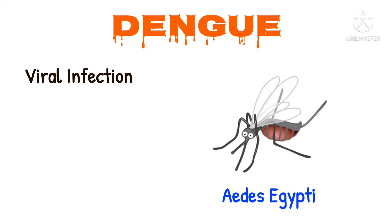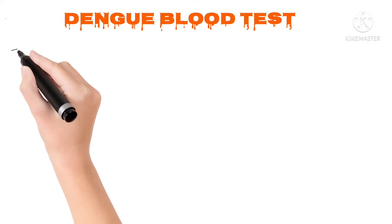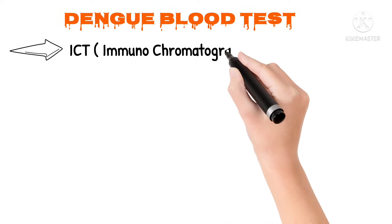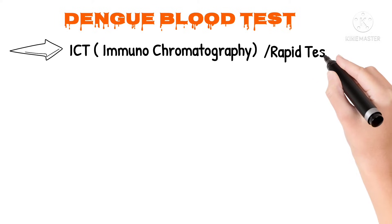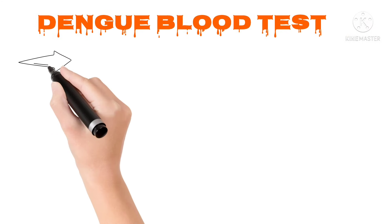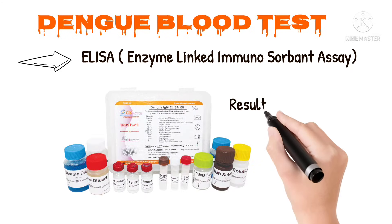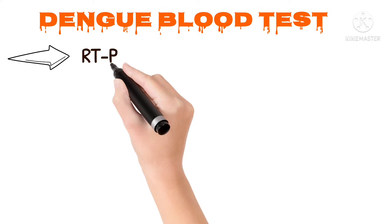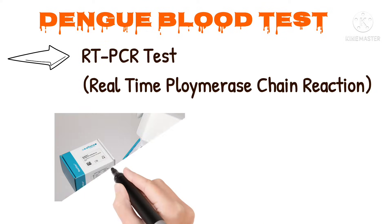Dengue testing is done by three methods. First is ICT, that is immunochromatographic test, which is a rapid test where results are announced in 15 minutes. Second is ELISA, enzyme-linked immunosorbent assay, where results come in one to two days. Third is RT-PCR, real-time polymerase chain reaction.